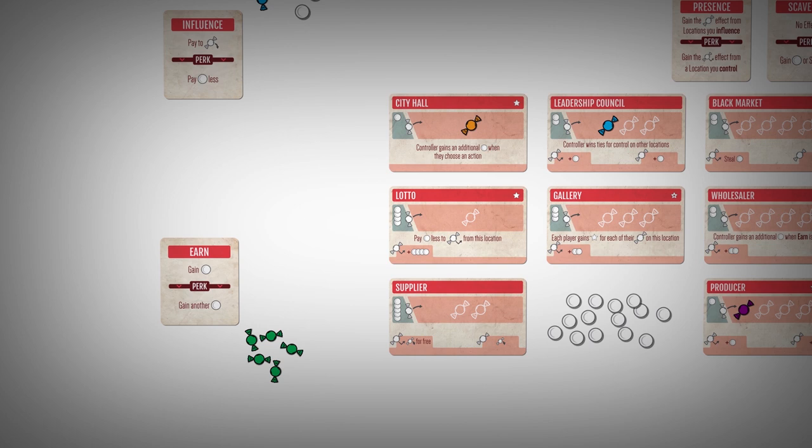The second token can be on the same or a different location, and the same or a different player. Any player ousted from a location gains the ousted bonus listed on that location.